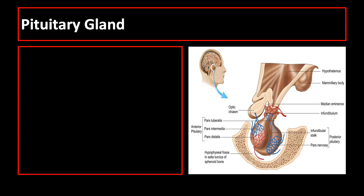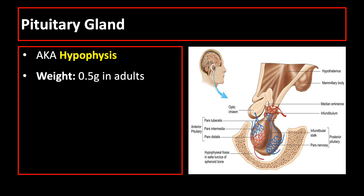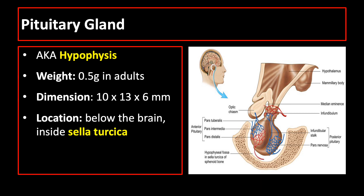The pituitary gland or hypophysis weighs about 0.5 grams in adults and has dimensions of about 10 by 13 by 6 millimeters. It lies below the brain in a small cavity on the sphenoid bone which is called the sella turcica.